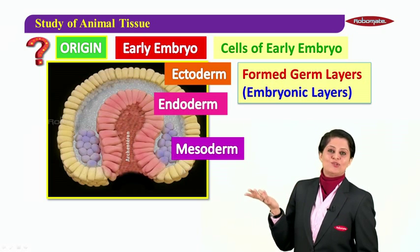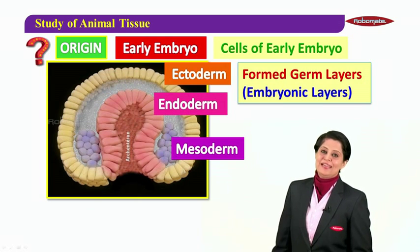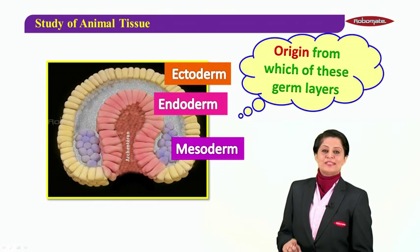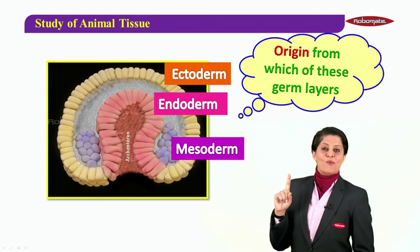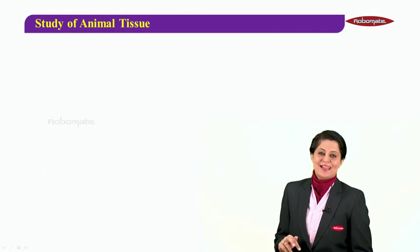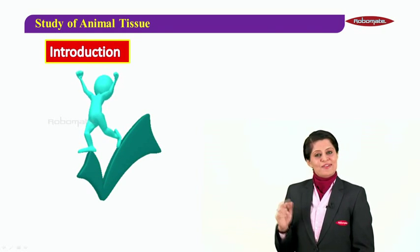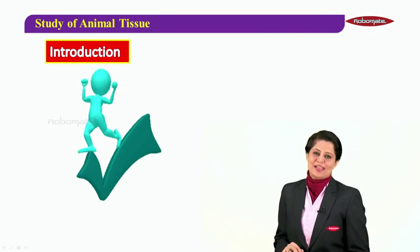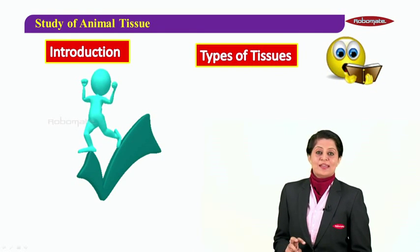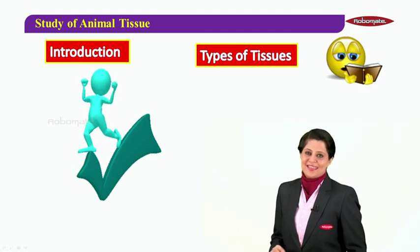These three embryonic layers gave rise to all different tissues, because in early embryonic stage you were just these three layers. So when we talk about origin, we mean from which of these three germ layers a tissue originated. In the next module we will cover the different types of tissue — till then, take care.